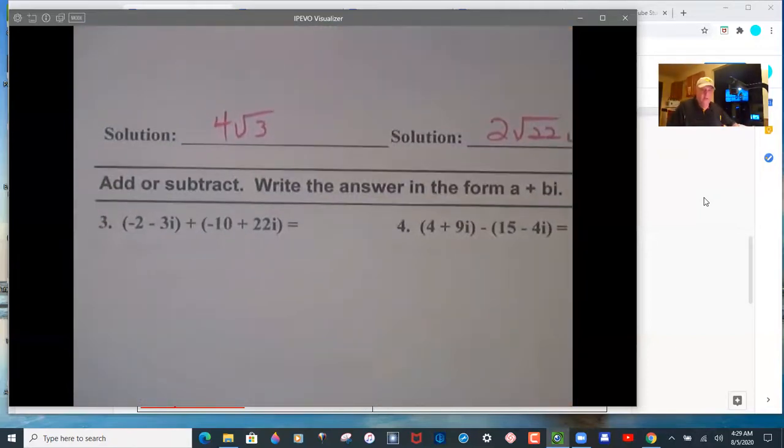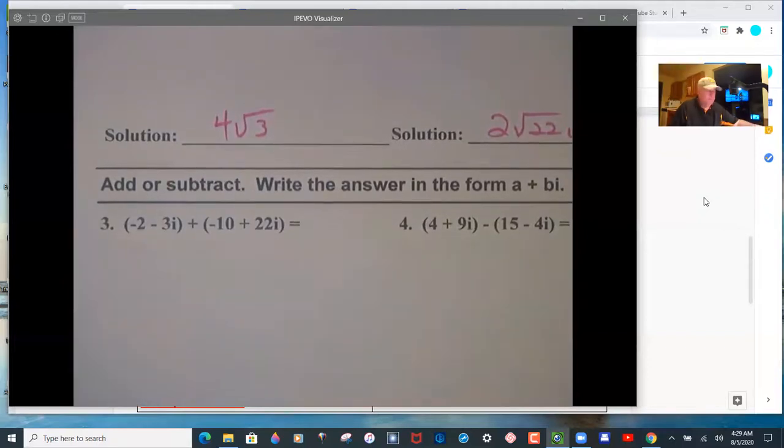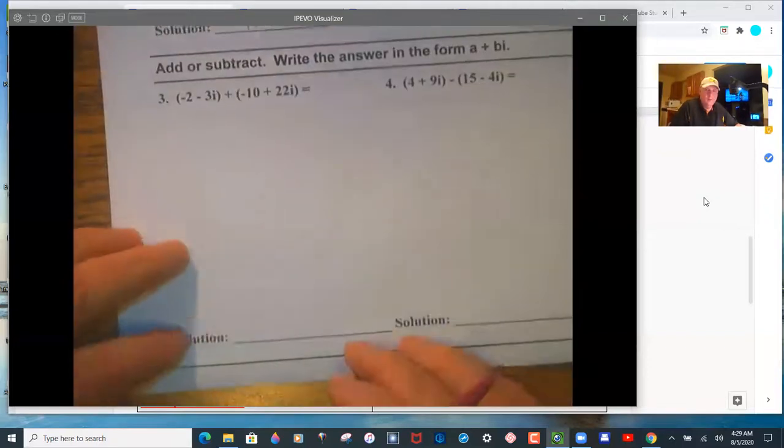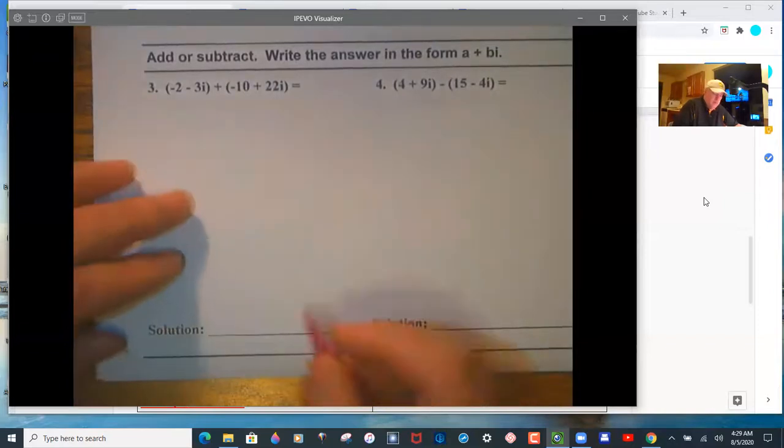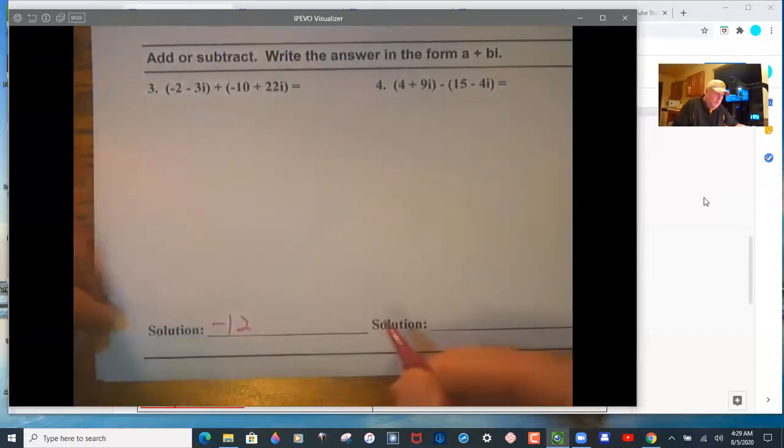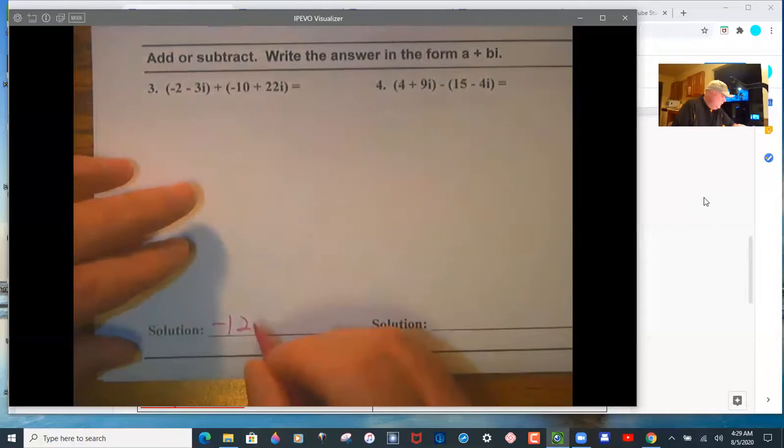So 2 times the square root of 22i is that reduction. Combining like terms, negative 2 plus negative 10 is negative 12. Then negative 3 plus 22 is 19i.